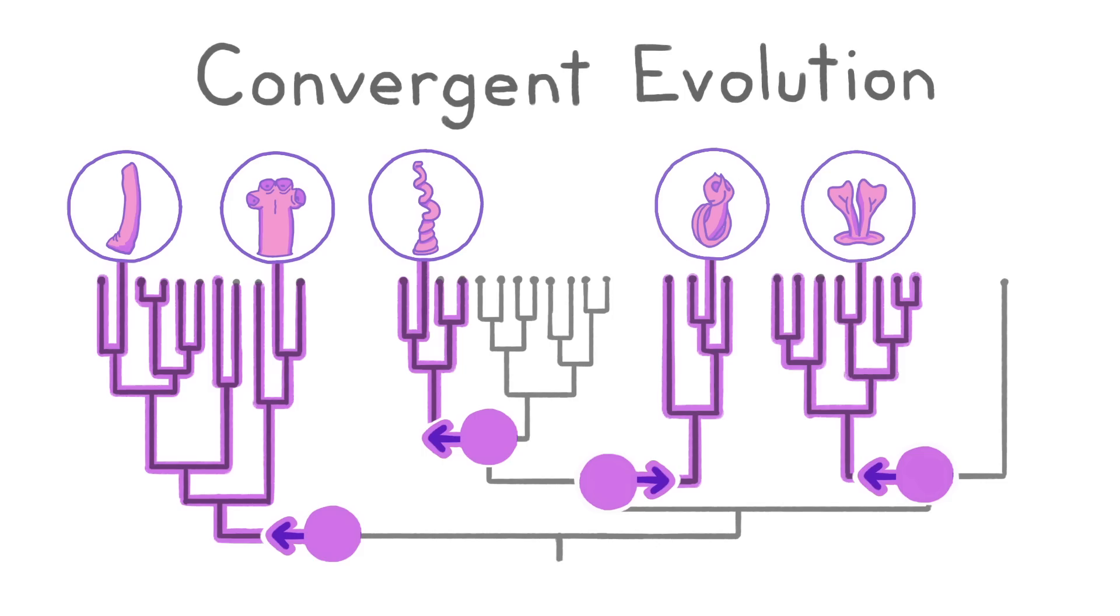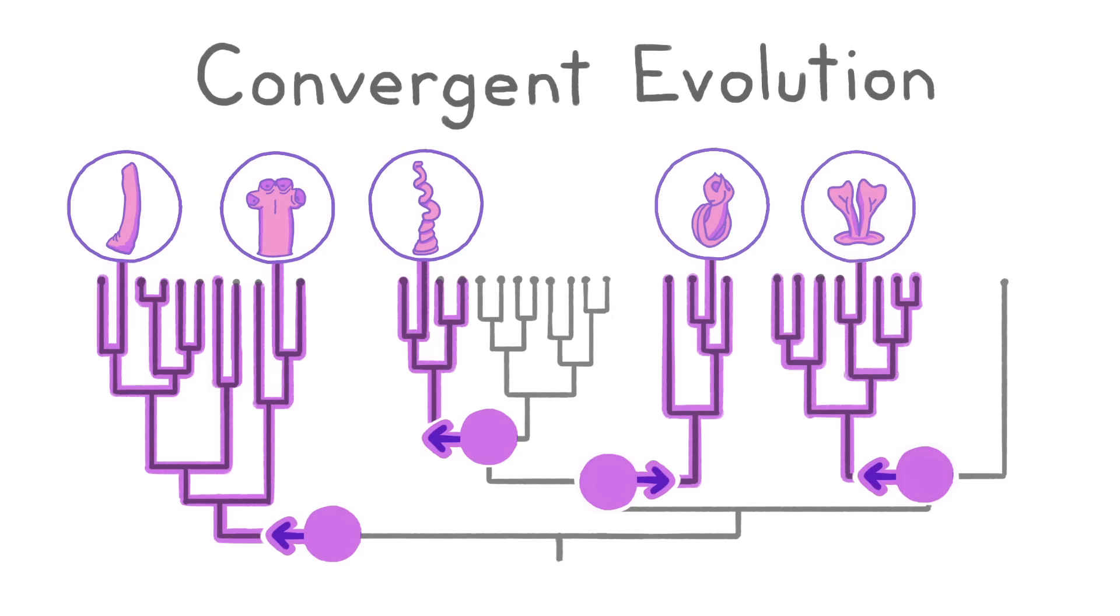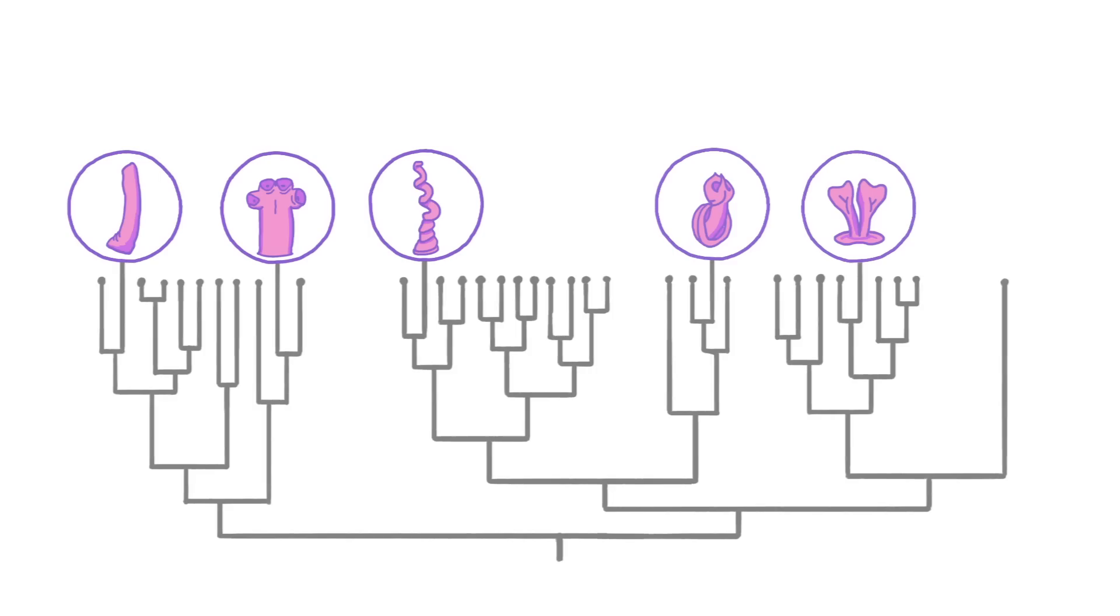The first possibility is known as convergent evolution. This cornucopia of copulatory contraptions may have arisen independently in different branches of the tree, just like how protective prickly protrusions evolved independently in several small, tasty, and not particularly closely related animals.